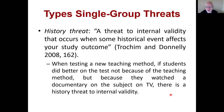The first is the history threat: a threat to internal validity that occurs when some historical event affects your study outcome. For example, if you're testing a new teaching method and students did better on a test not because of the teaching method but because they watched a documentary on the subject on TV, there's a history threat. You give a pre-test, introduce the new teaching method, then test again — but it might've been the documentary that caused the improvement.